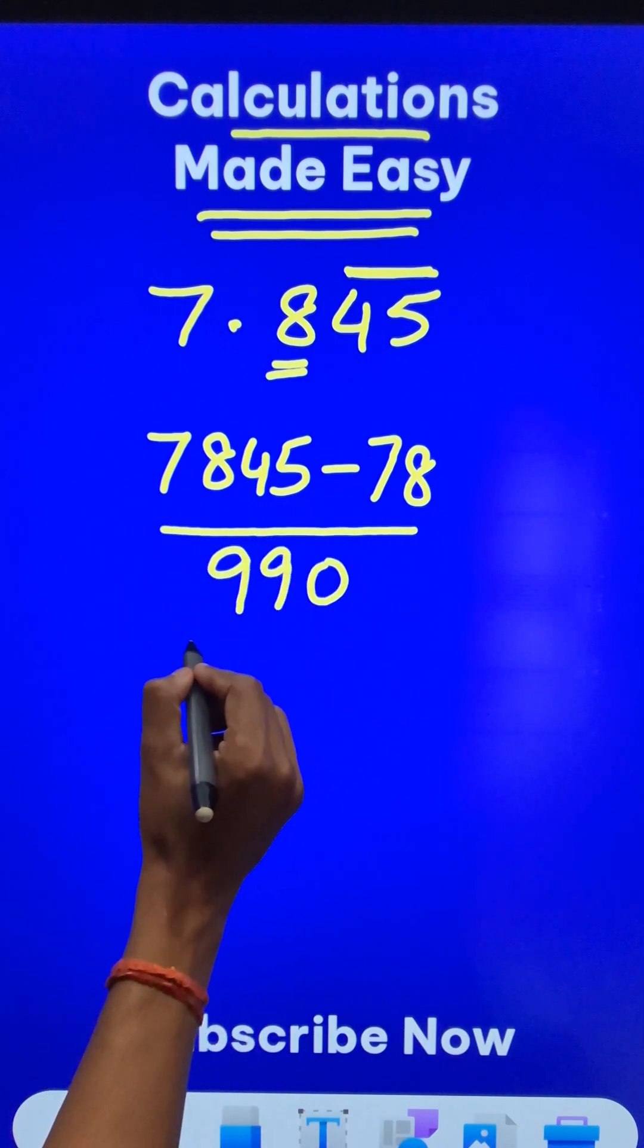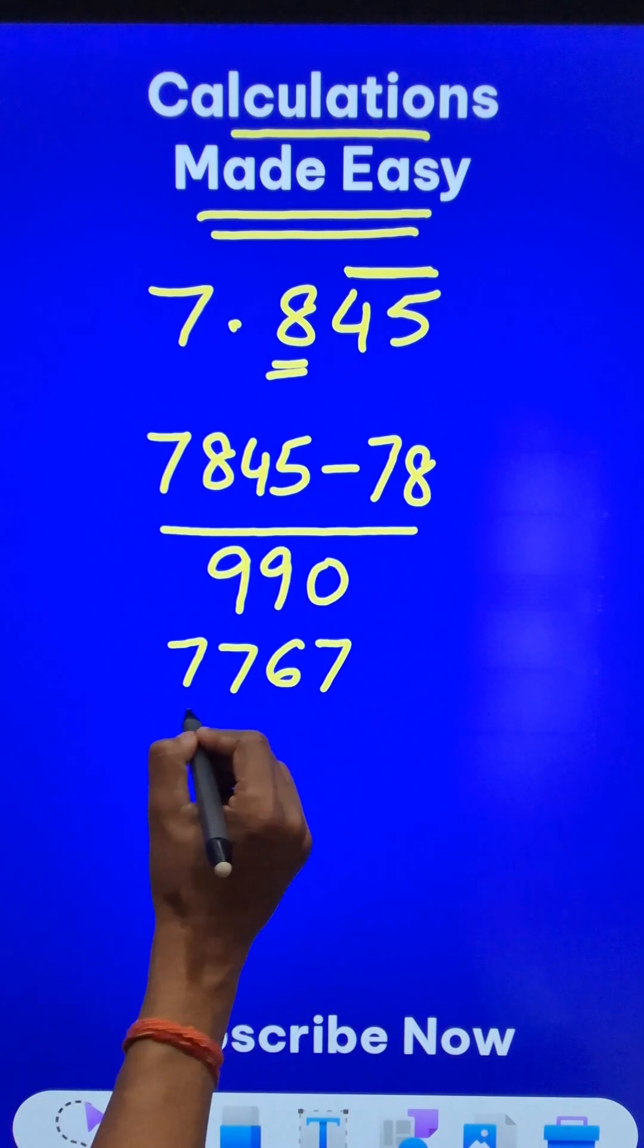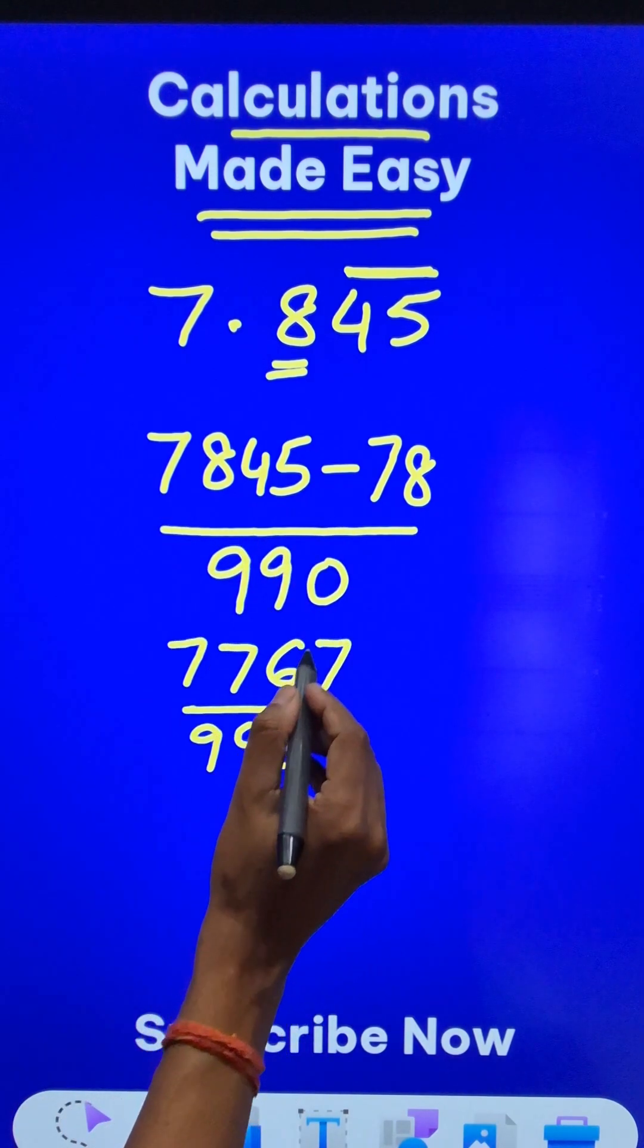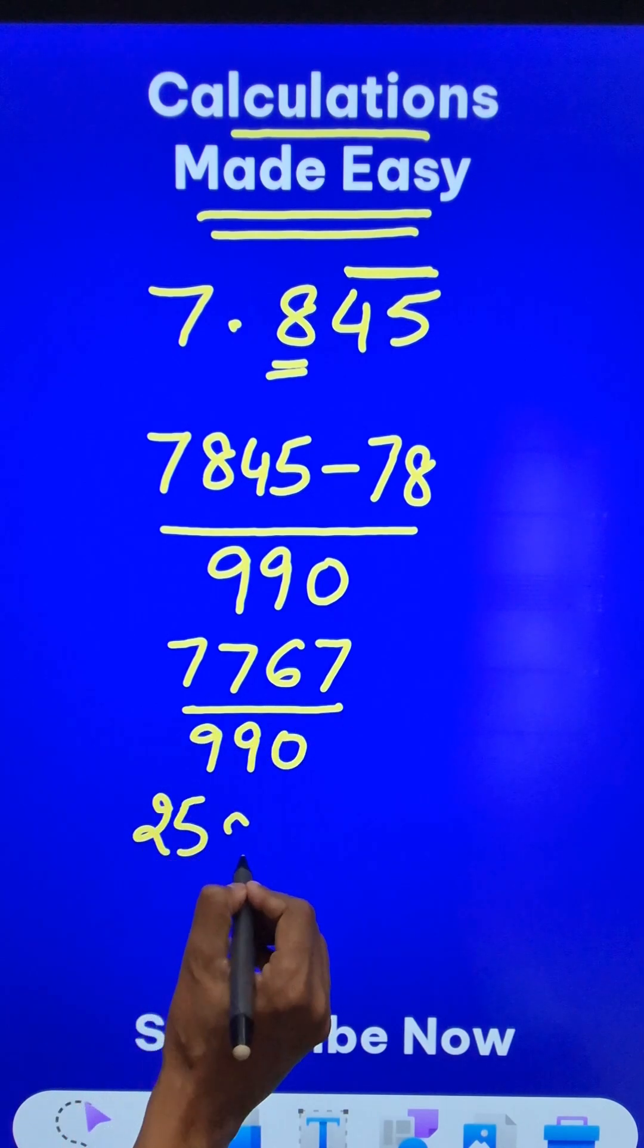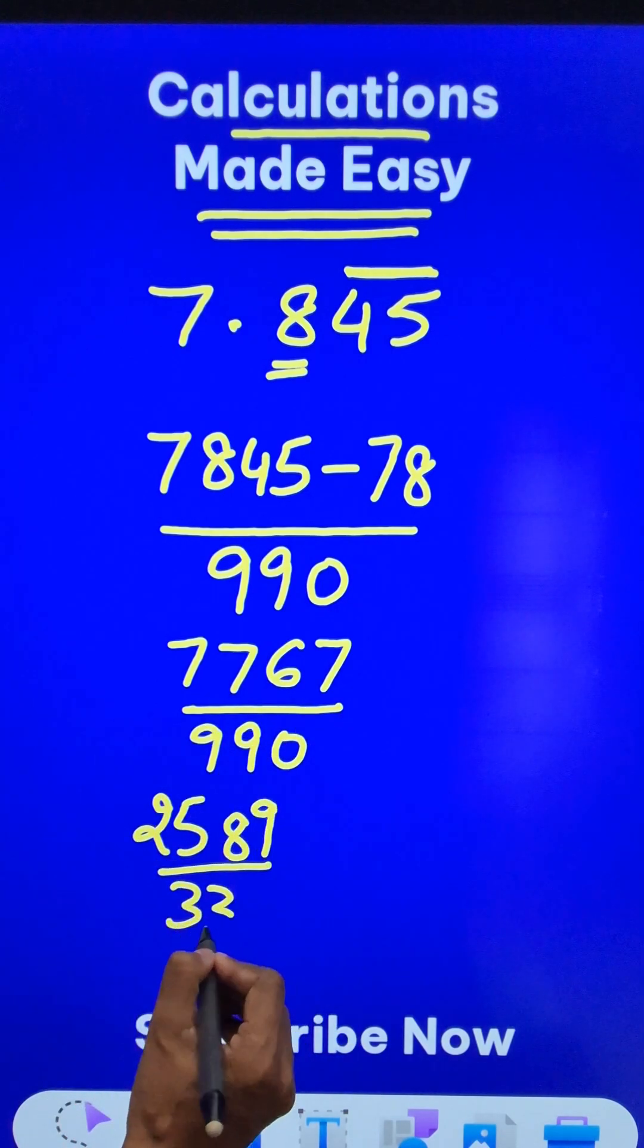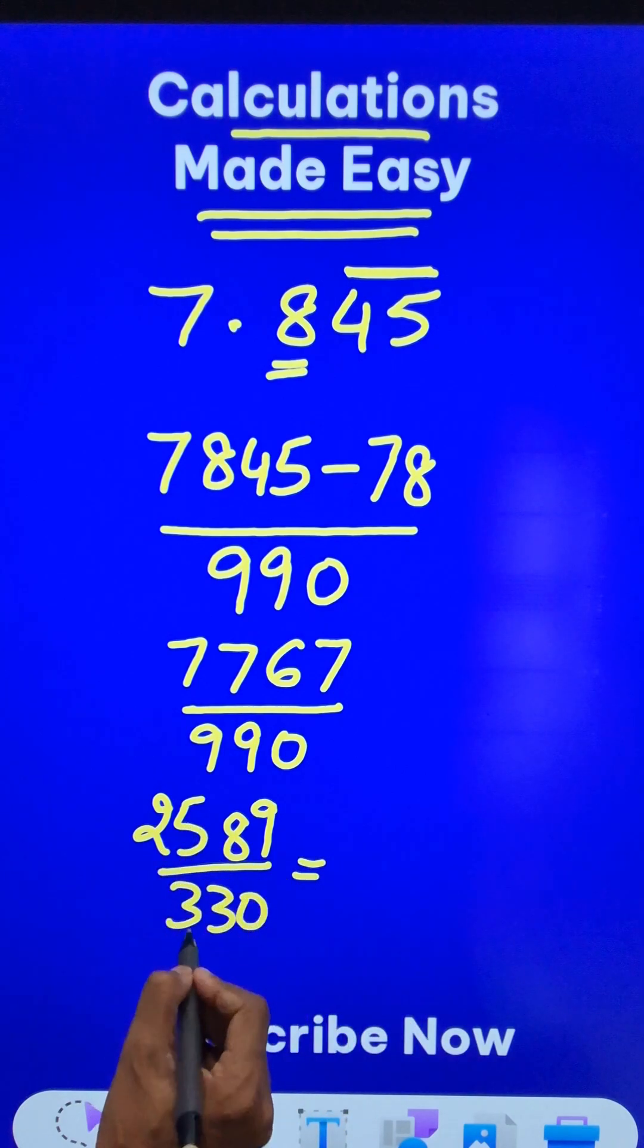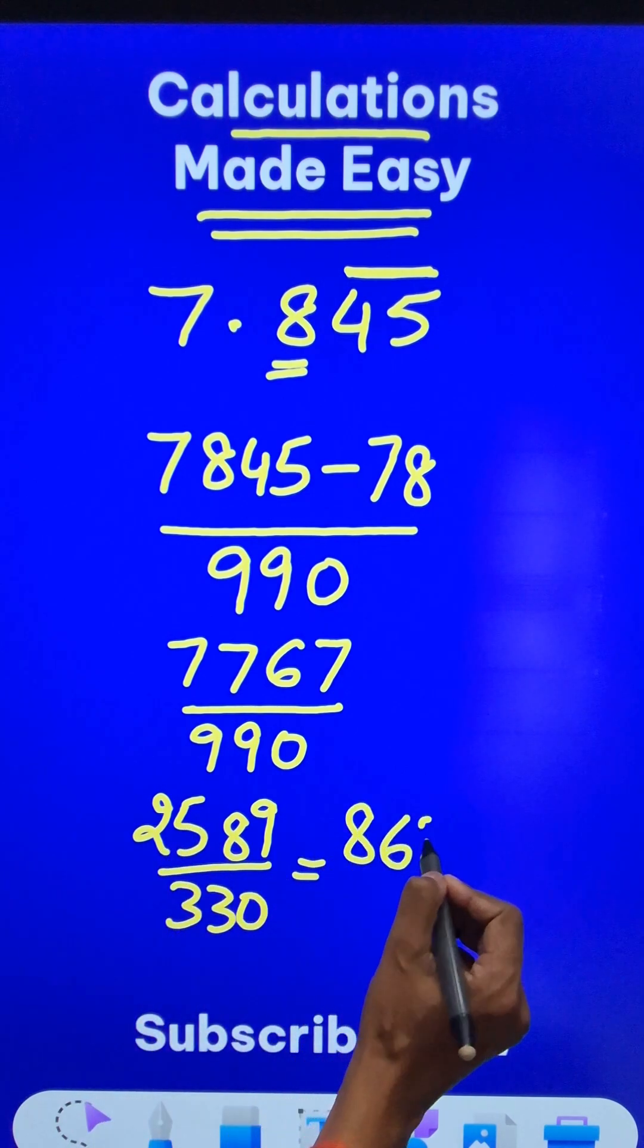The difference between these two is 7767 with 990 in the denominator. When you cancel the common factor 3, you get 2589 over 330. This is divisible by 3 again, so we get 863 over 110.